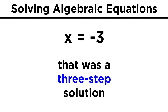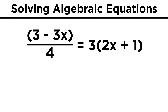So that problem took three steps, which is certainly more than one, but we will later see plenty of examples that require much more manipulation than this, so let's try some even harder examples. How about this one: the quantity of (3 - 3x) over four equals three times the quantity of (2x + 1).